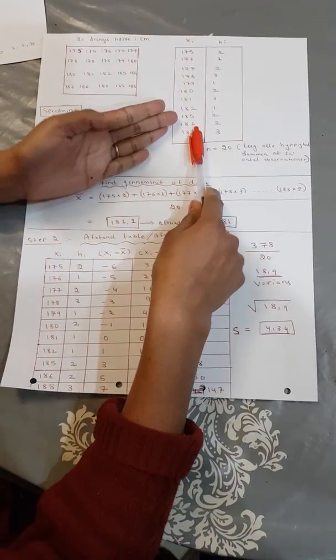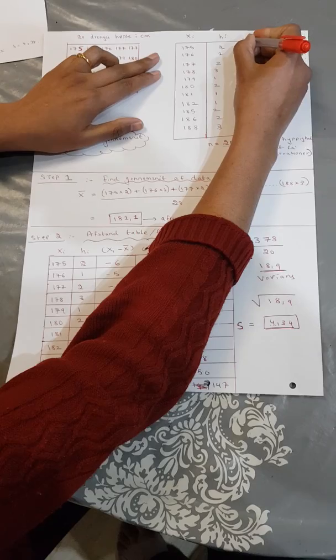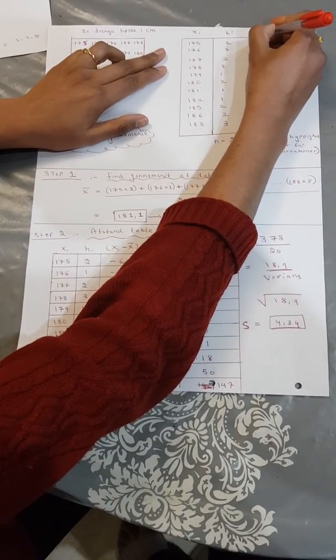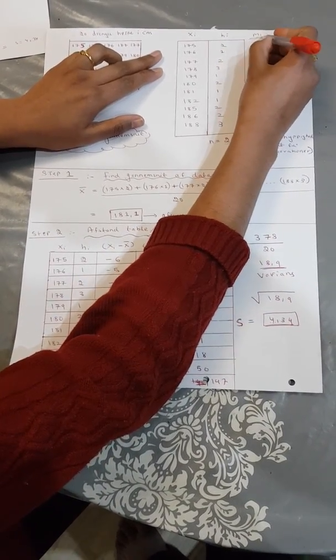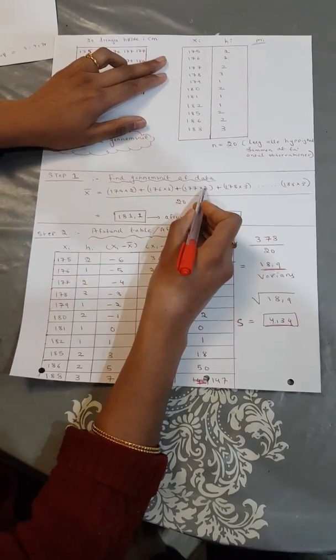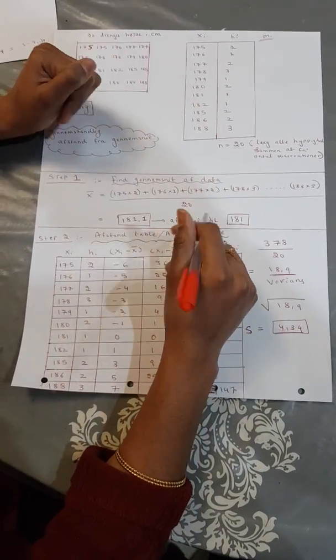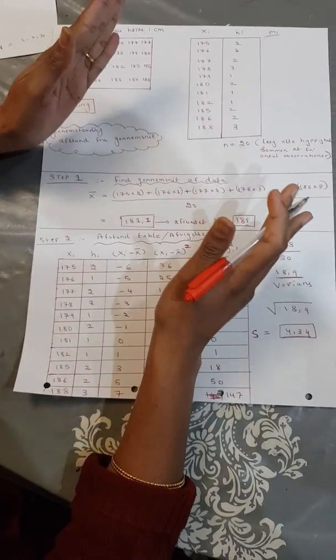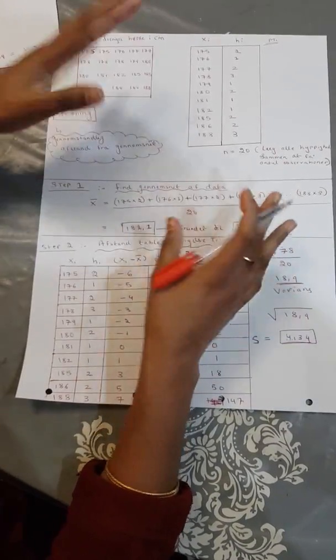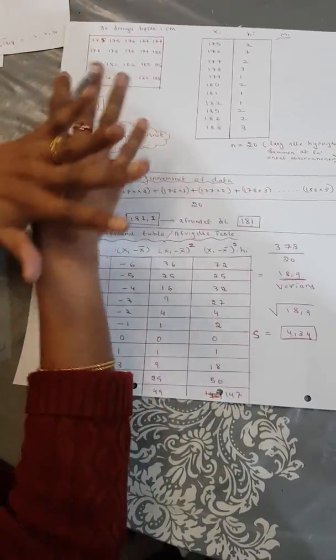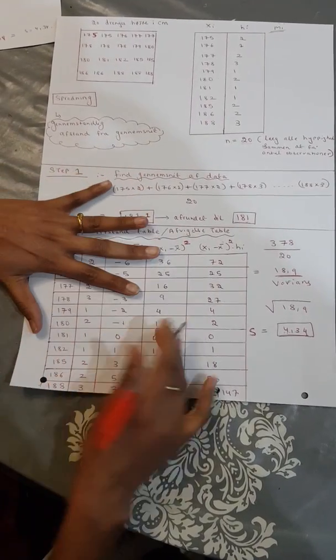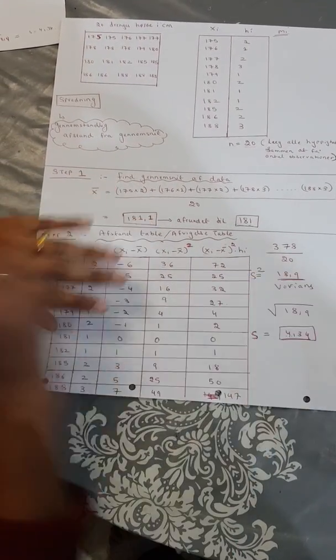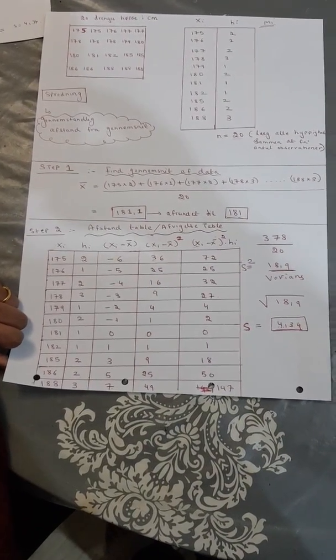Remember that for discrete data, we divide by n. So the greatest difference is that we divide by n instead of n minus 1. So what we have is the standard deviation. I hope you have understood. Good.